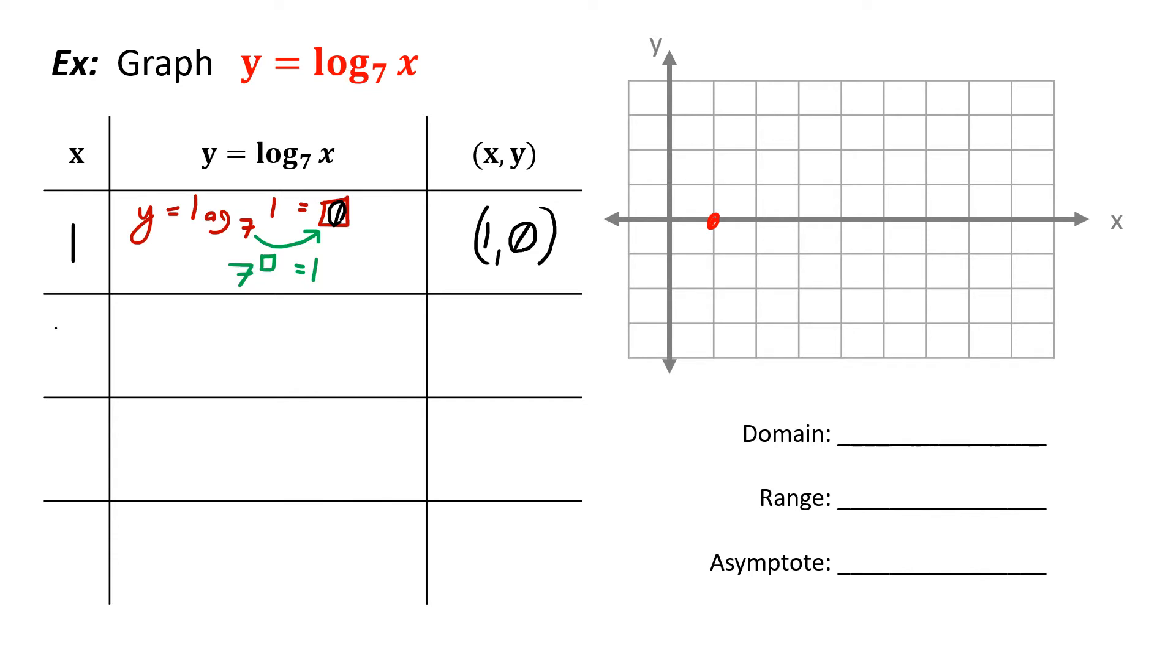The next value, it's always a good idea to pick the base. So log base 7 of 7. So the 7 is what I'm substituting. And we want to know what that would equal. So just ask yourself, 7 to what power would give you 7? And the answer is 1. So that gives us the 0.71.